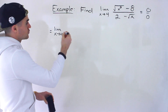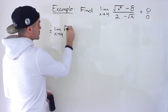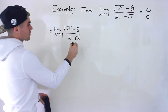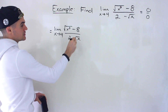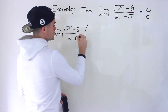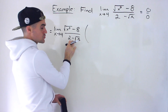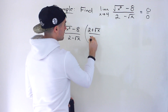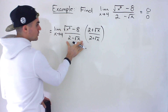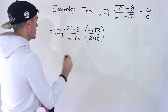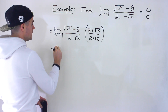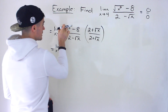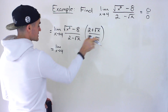So we're going to have to get rid of those square roots. We have the square root of x to the power of 3 minus 8, over 2 minus root x. Let's first rationalize the denominator — we multiply by its conjugate, which is 2 plus root x, in both the numerator and denominator. It's like multiplying the whole expression by 1.